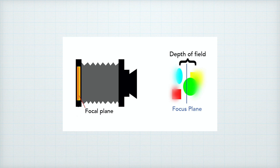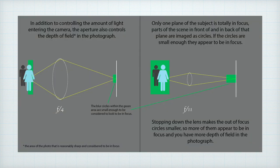Depth of field is the region of a scene from foreground to background that is acceptably sharp. A lens can only focus on one plane of a scene. Everything in front of or beyond the focus plane is out of focus and gets projected as a circle instead of a point. There is a threshold in our vision where below a certain size, these small blur circles — called circles of confusion — look like points and appear in focus. This is where we get depth of field. When the lens aperture is wide open, the image is projected from a wide area onto the sensor. When the lens gets stopped down, the angle of coverage gets narrower and more circles of confusion are small enough to appear in focus.